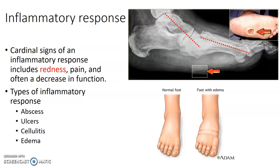Inflammatory response — some red flags, or cardinal signs, are redness, pain, and often a decrease in function or range of motion. Types of inflammatory response can be abscess, ulcers, cellulitis, or edema. Here you can see a normal foot versus a foot with edema — there's some pitting. An ulcer is an opening on the bottom, which you can see in the foot x-ray.